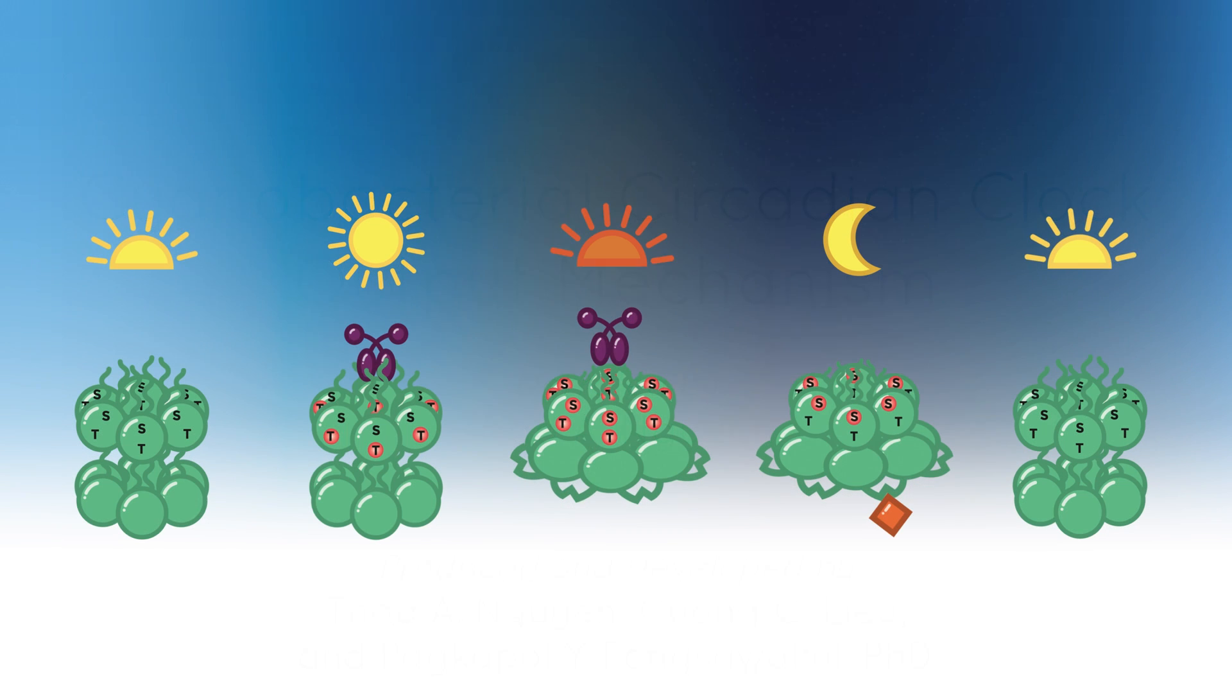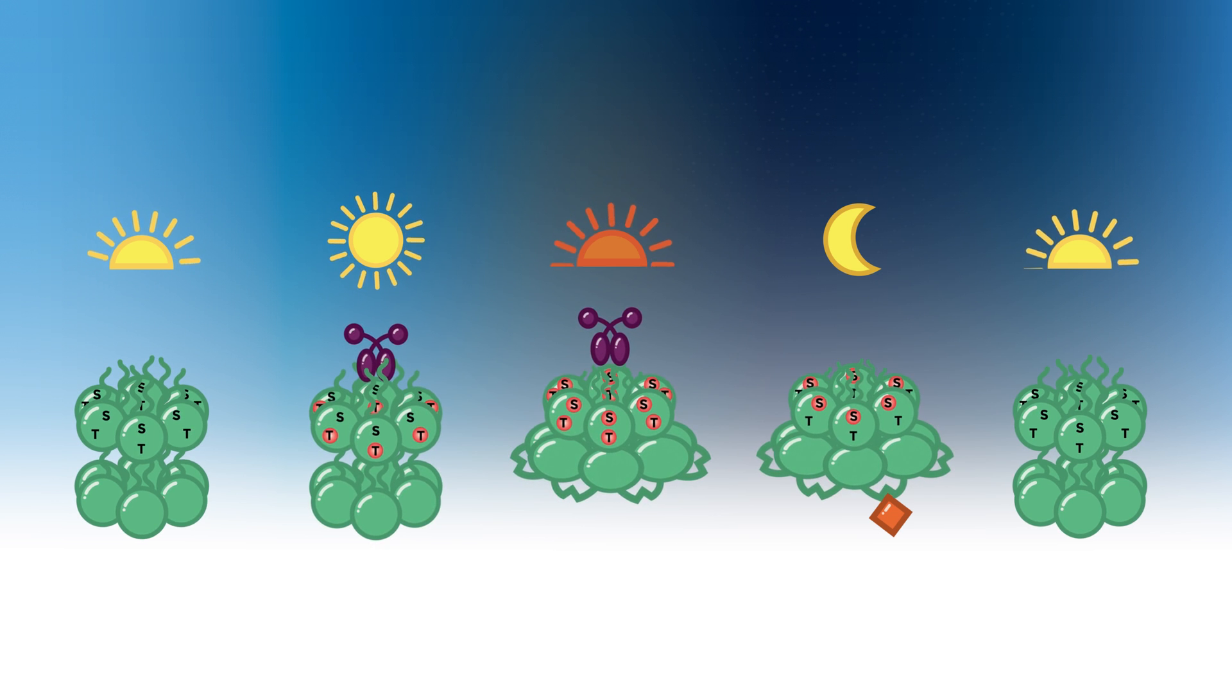At the heart of the cyanobacterial circadian clock oscillator, Kai-C changes its phosphorylation states throughout the day and night. As a result, the oscillator regulates waves of rhythmic gene expression that drive cyanobacterial physiology, such as photosynthesis, glycogen metabolism, and the timing of cell division.